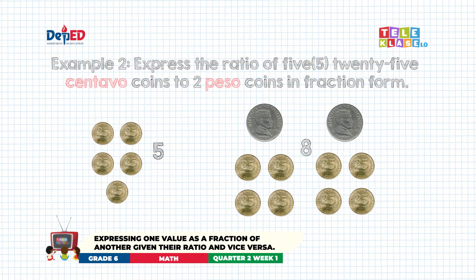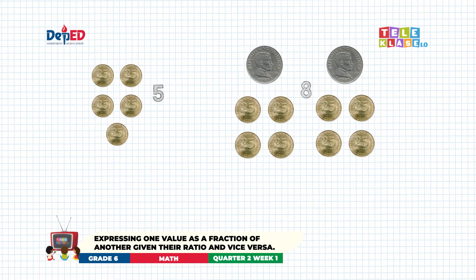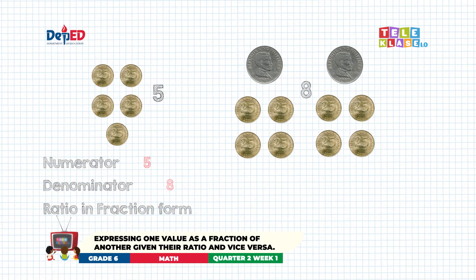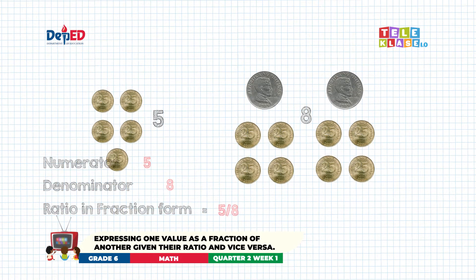Based on the given, we need to express the ratio using fraction form. What would be our numerator? It is five. How about our denominator? It is eight. Therefore, the answer is five-eighths.